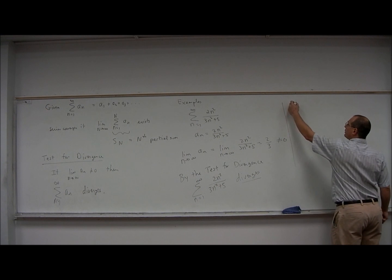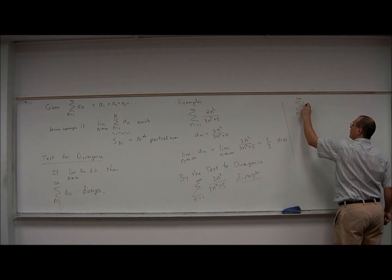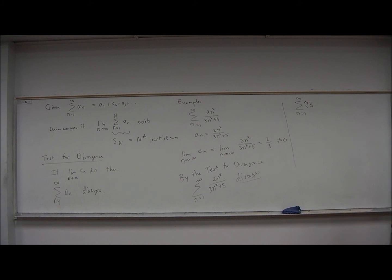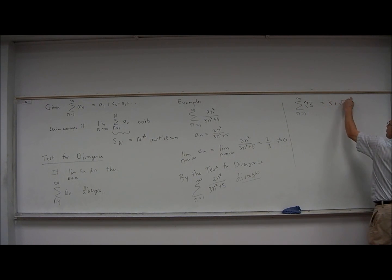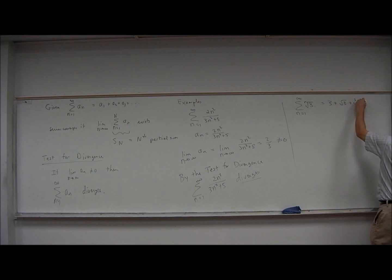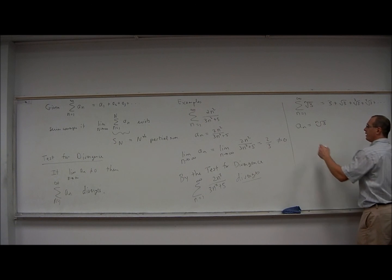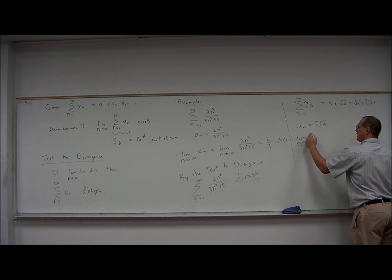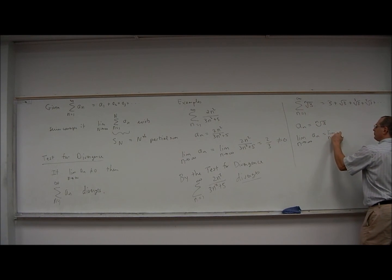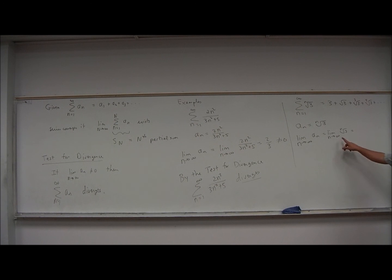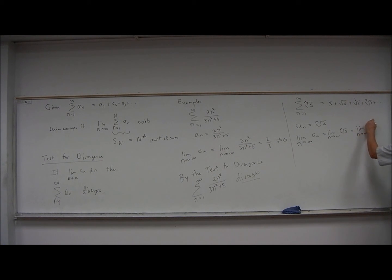Let's look at another example: the summation of the nth root of 3. This summation looks like 3 plus the square root of 3 plus the cube root of 3 plus the fourth root of 3, etc. So in this example, a sub n is the nth root of 3. To help us see the value of this limit, let's write the nth root of 3 as 3 to the power 1 over n.